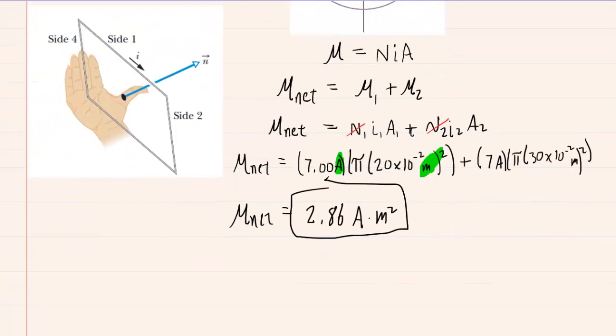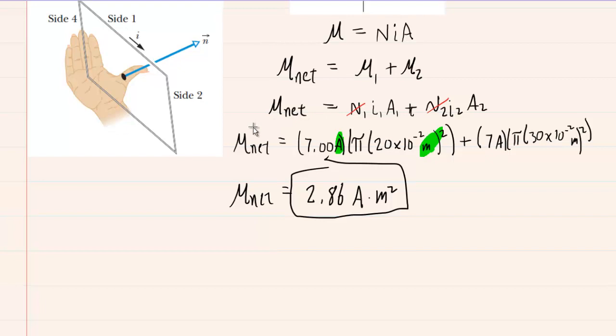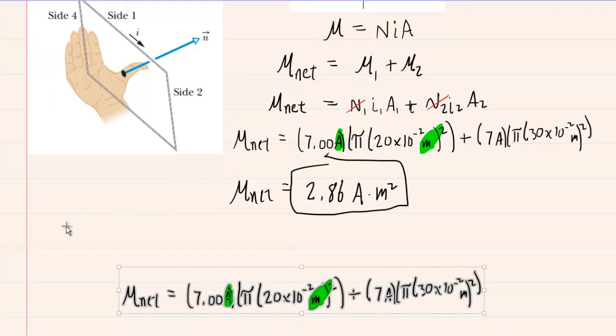So the truth is, for part B, we might get a little lazy here. We can kind of copy our setup here. But rather than adding the magnetic dipole moments, we will subtract them. So just change that plus sign to a minus sign. And then we'll re-input this into our calculators.